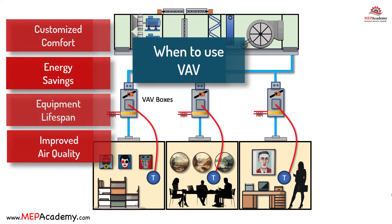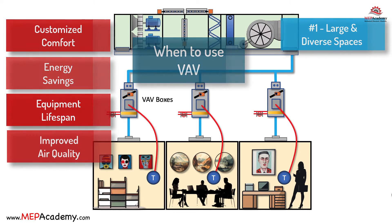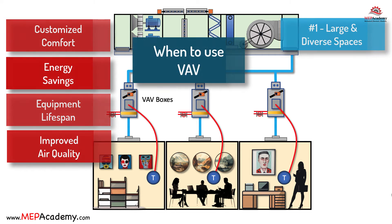When to Use a VAV System. Variable air volume (VAV) systems are versatile and energy efficient, making them a popular choice for various applications. 1. Large and Diverse Spaces: VAV systems shine in buildings with multiple zones and varying occupancy levels, such as office buildings, shopping centers, or hotels. They can adapt airflow and temperature settings to meet specific zone requirements.